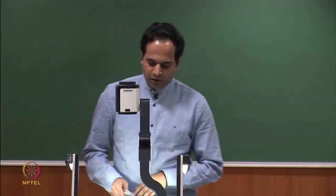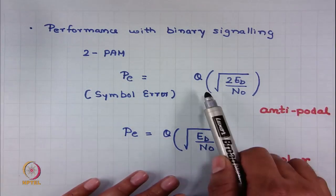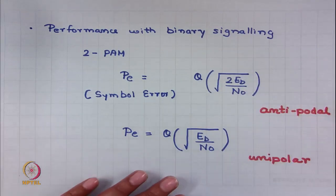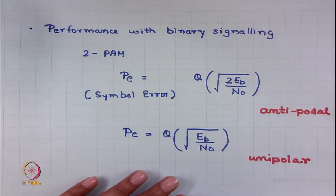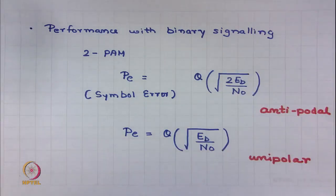We will talk about probabilities of bit errors later on. For binary signaling, there is no difference between bit errors and symbol errors because every symbol corresponds to one bit. But in the case of M-ary signaling, this is not the case. At this moment, we are concentrating on symbol errors. The probability of error for 2-PAM is Q(√(2Eb/N₀)), and for unipolar signaling it is Q(√(Eb/N₀)). These formulas must be learned by heart.